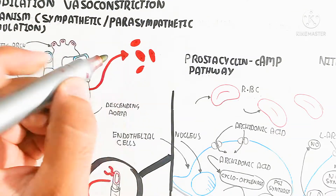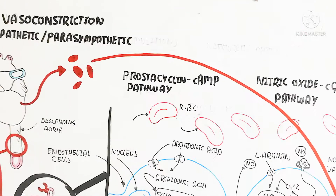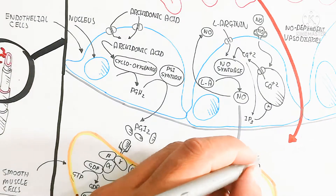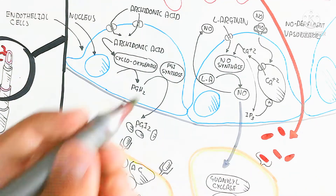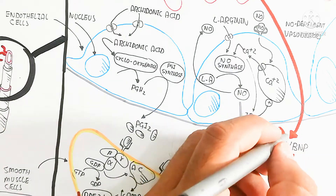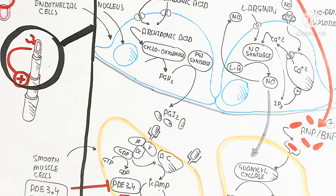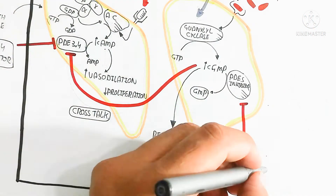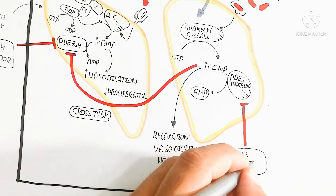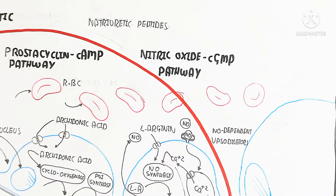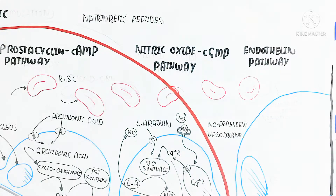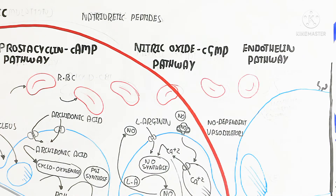The heart also produces natriuretic peptides — atrial natriuretic peptide (ANP) and B-type natriuretic peptide (BNP) — which move into the smooth muscle cell. Binding with their receptors stimulates guanylyl cyclase. This decreases blood pressure, and reabsorption of water and sodium from glomerular filtration is decreased, further reducing blood pressure. Vasodilation is stimulated, and cardiac preload is increased.